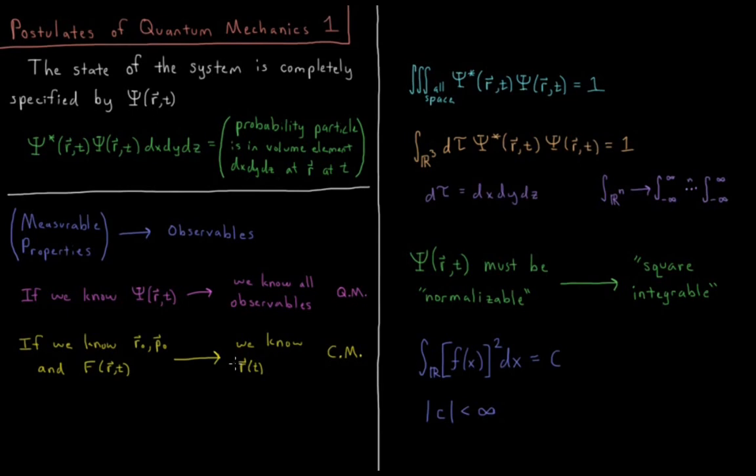So in classical mechanics, the trajectory, if we know that for all points in time, we can calculate any observable property. And in quantum mechanics, if we know the wave function, we can calculate all observable properties.